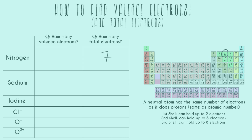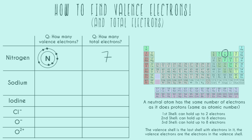Let's draw out our nitrogen atom. We have our center nucleus N, and then in our first orbital we fill two electrons — one and two. We haven't drawn up to seven electrons yet, so we start filling in our second orbital with an additional five electrons. Now nitrogen is showing a total of seven electrons. The valence shell is the last shell with electrons in it, and the valence electrons are the electrons in that valence shell.